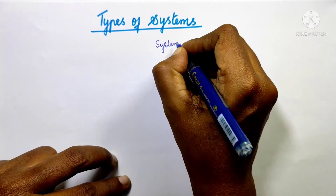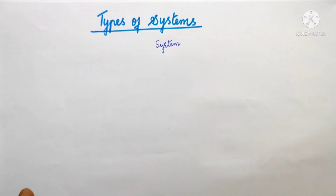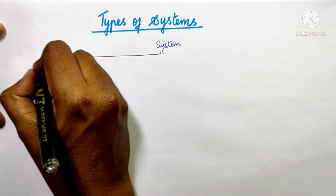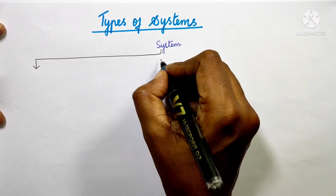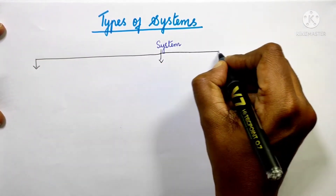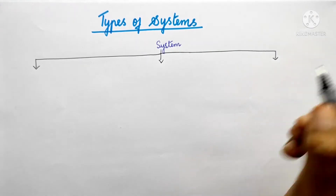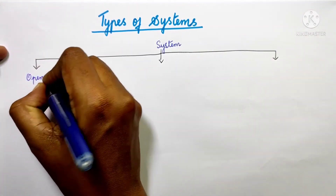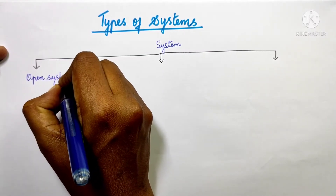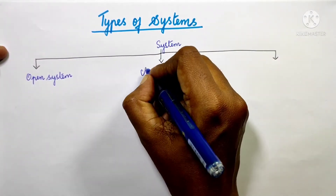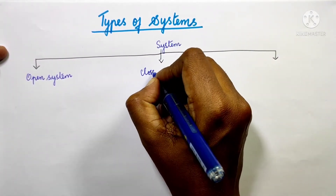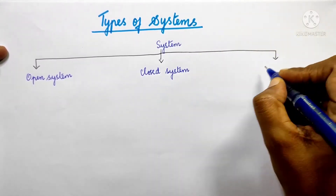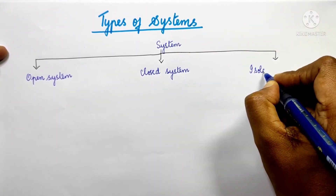Systems are classified into three different types: one, open system; two, closed system; three, isolated system.